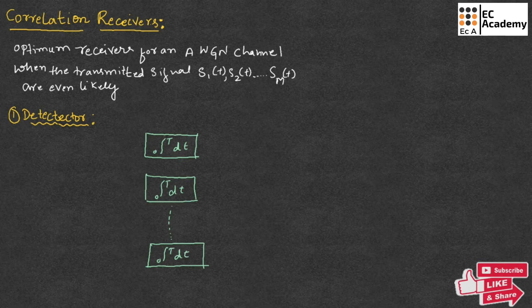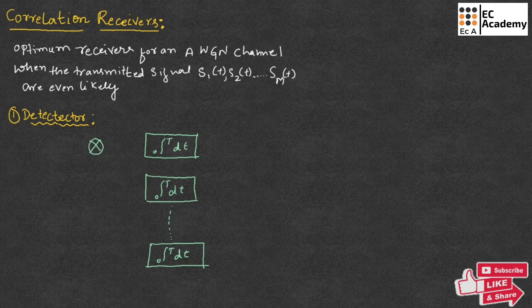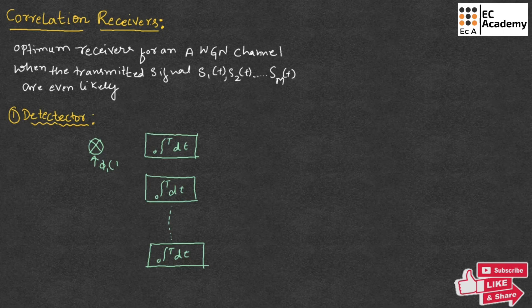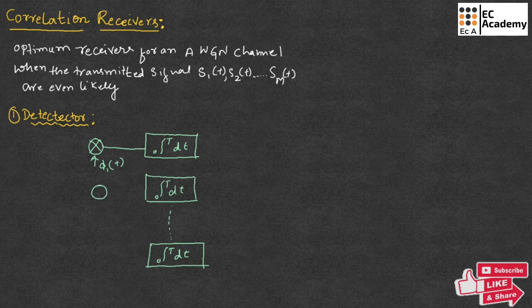For this M number of correlators, orthonormal basis functions are supplied. So first orthonormal basis function, let us call that as phi 1 of T, so here it is connected to correlator. Second orthonormal basis function, which is phi 2 of T, which is supplied to the correlator.